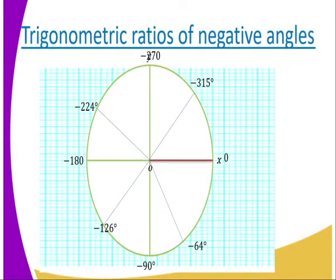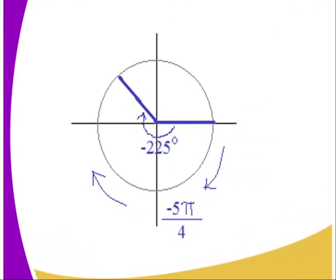You can see that negative 64 degrees is in the fourth quadrant. Negative 126 degrees, which is greater than negative 90 and less than negative 180, is in the third quadrant. The next one is in the second quadrant. Negative 315 degrees, which is greater than negative 270, is also located accordingly. You can see that negative 225 degrees is in the position of the second quadrant, where the angle is greater than negative 180 degrees and less than negative 270 degrees.